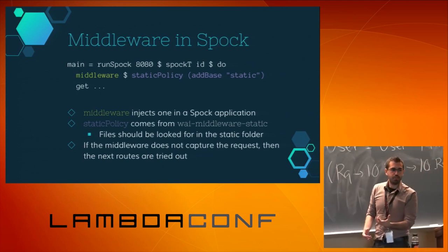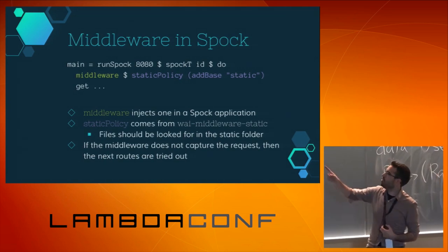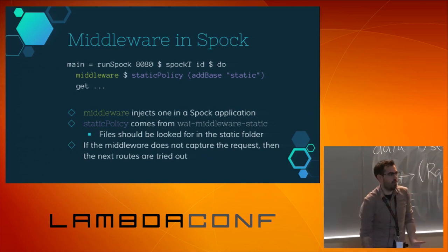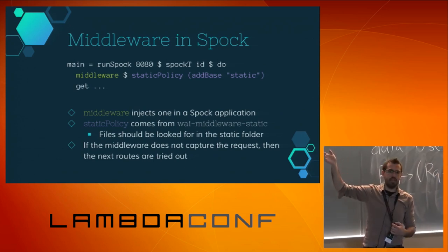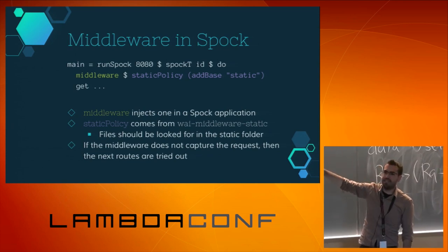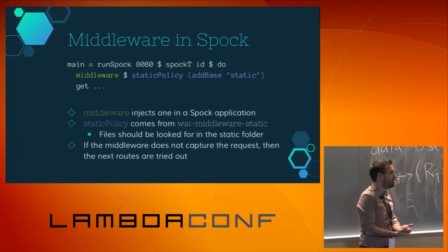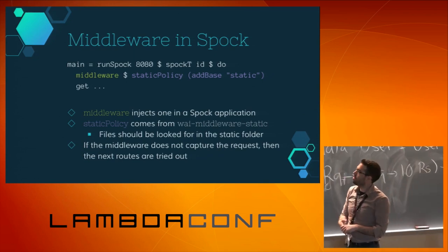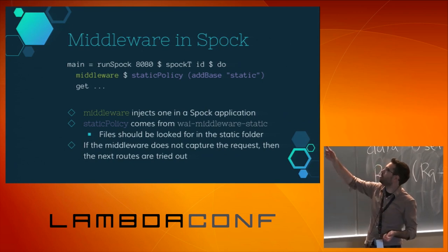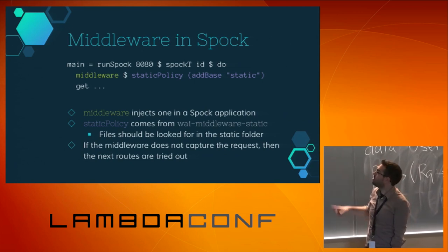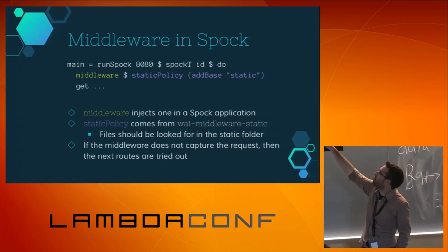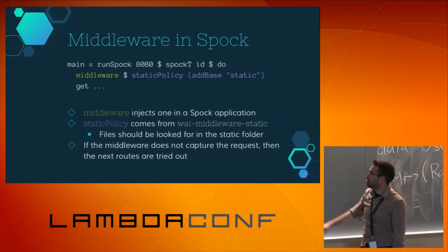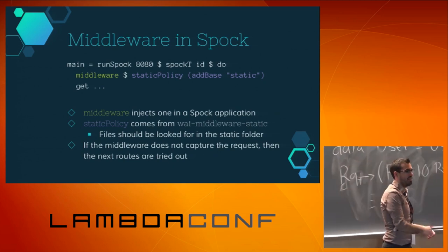To use middleware in Spock, instead of in any WAI application, there is a specific call: middleware. It says okay, from now on whatever my Spock application is, it's going to be wrapped by this middleware. In this case we are using the middleware-static package — if we receive a request, we first try to look it up in the static directory using a policy that tries the static slash whatever path you told it, and if it doesn't find it, tries the rest.